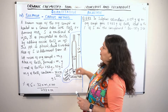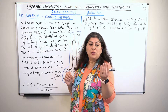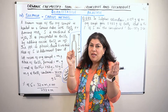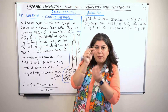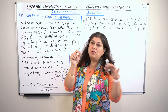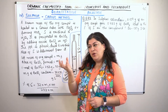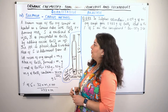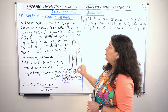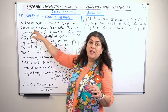First of all, we take a known mass compound — we always start with the mass of the compound. A known mass of organic compound is heated in the Carius tube with an oxidizing agent, which can be sodium peroxide or fuming nitric acid.